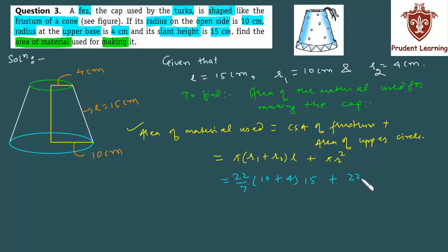This gives us 22/7 × 14 × 15 plus 22/7 × 16, which on further simplification gives us 22 × 2 × 15 plus 22/7 × 16. This equals 44 × 15 plus 352/7.